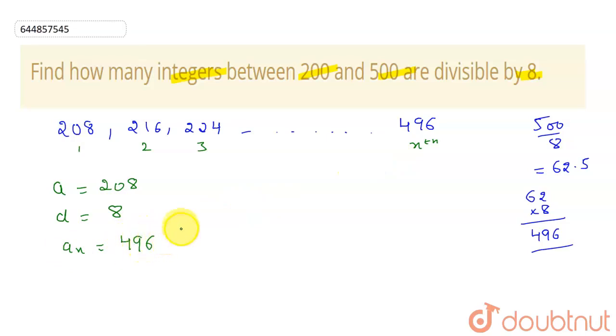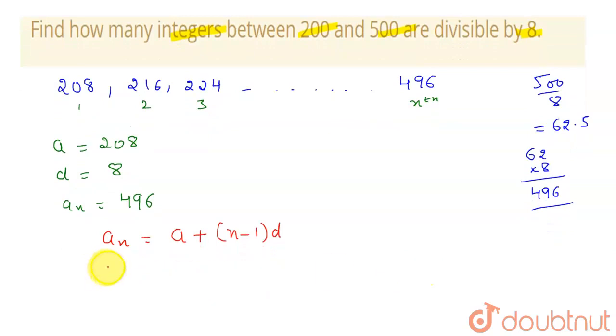So I can find its number by using another formula, which is an is given by a plus (n minus 1) times d. Now let me substitute my values here. The nth term is given as 496, a is 208, and d of this series is 8.